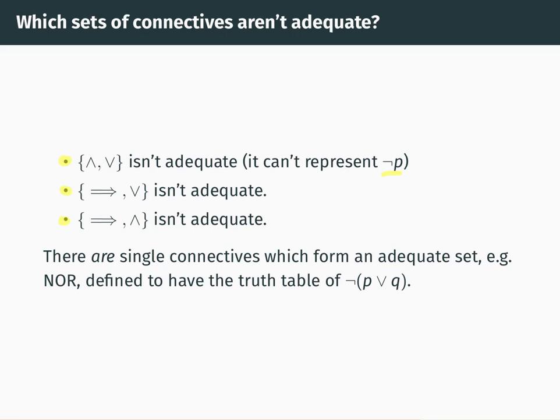It's perhaps slightly surprising that the answer is yes — there are single connectives which form an adequate set on their own. It's a theorem, which we won't prove in this course, that any well-formed formula is logically equivalent to one which just uses the connective NOR. NOR is a logical connective defined by a truth table which is the same as the truth table of NOT(P OR Q) — that's why it's called NOR, short for NOT OR. NOR is adequate. In fact there are other single adequate connectives too, such as what's called the Schaeffer stroke, or NAND.